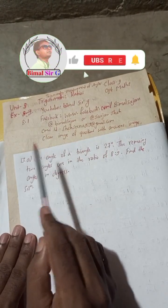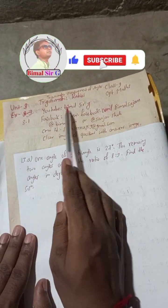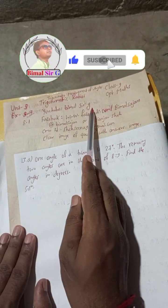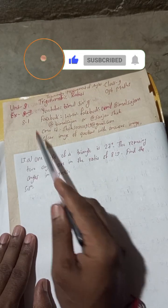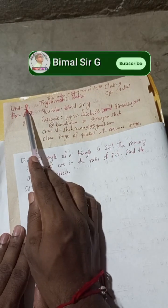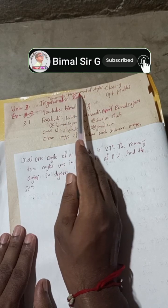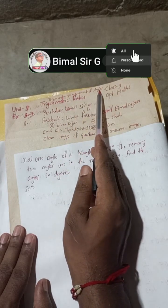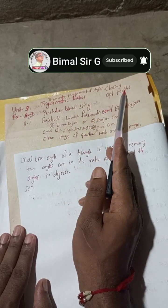Radhe Radhe, Jaya Sri Krishna. Class 9 and 10 students, welcome back to Bhimalsarji YouTube channel. This is question number 13a, exercise 8.1, unit 8, trigonometry — measurement of angles, class 9 optional maths.